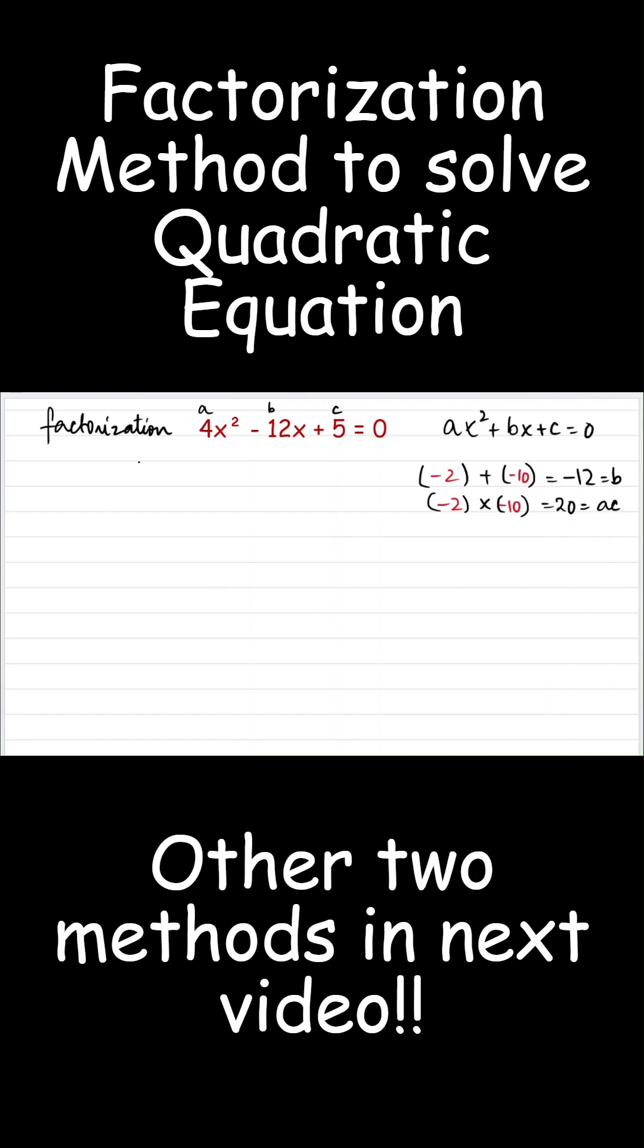So let's rewrite our equation. So 4x squared, this minus 12 is what? Minus 2 added to minus 10. So minus 12x will be minus 2x added to minus 10x plus 5 as it is equals 0.